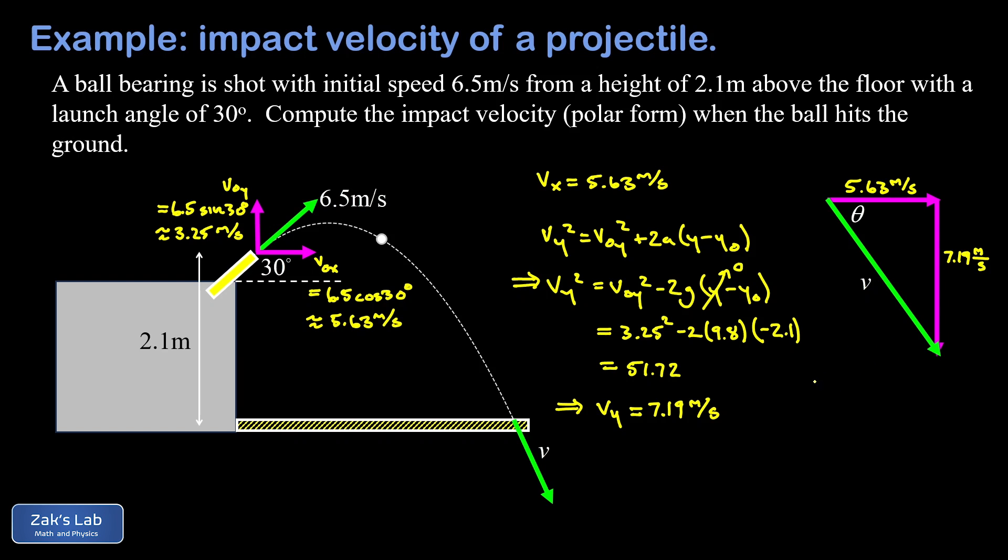To find the hypotenuse here, in other words the final speed, we just use the Pythagorean theorem. I get the square root of 5.63 squared plus 7.19 squared and this gives us a final speed of about 9.13 meters per second. We could call that the impact speed of the projectile.